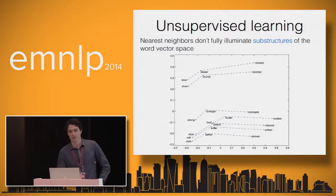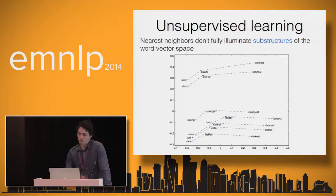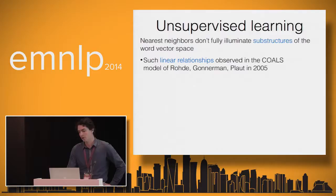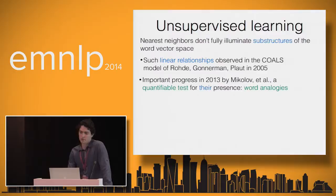Here's another example: triplets of adjectives, comparatives, and superlatives — slow, slower, slowest; short, shorter, shortest — and these form triangles that are roughly similar in the space, the same size and angles. I'm not the first person to observe such structures. I think the first observation was back in 2005, but they really came to the forefront last year when Mikolov et al. introduced a quantifiable test for the presence of these linear substructures: word analogies.